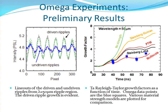Here are some of the preliminary results. A lot of the experiments I've participated in haven't been published yet, so I can't share too much. But this shows the initial ripple and the final ripple, demonstrating that there is growth happening in these experiments. These blue dots are data points from Omega plotted against different strength models.